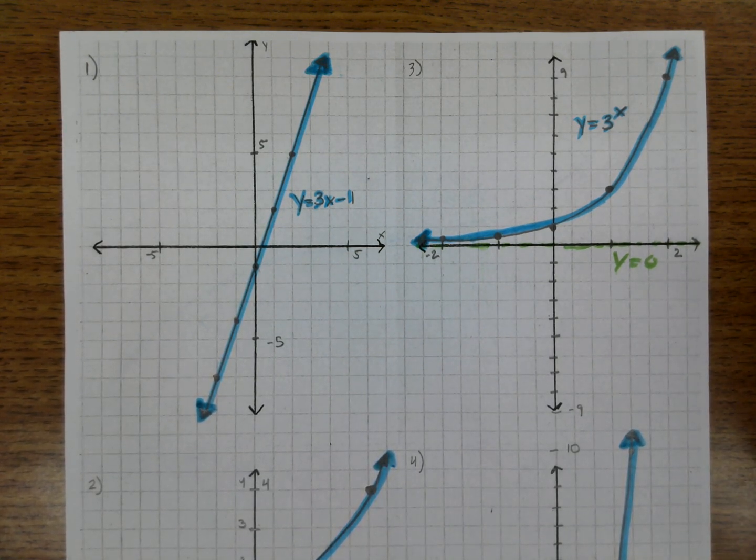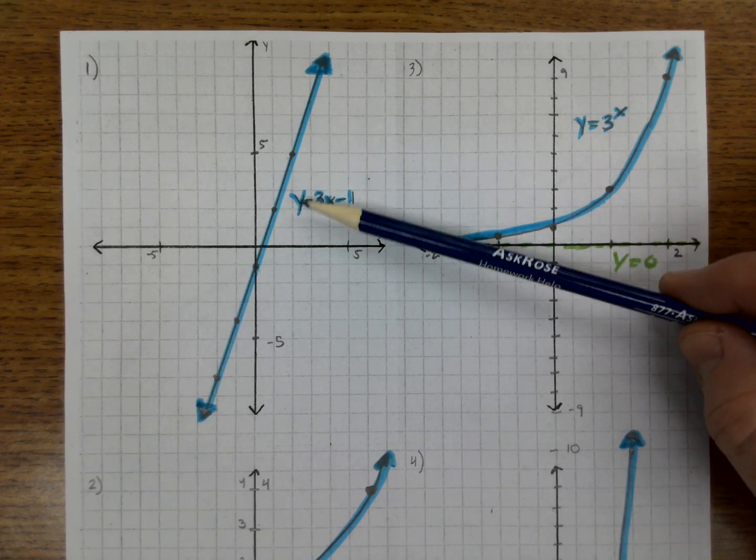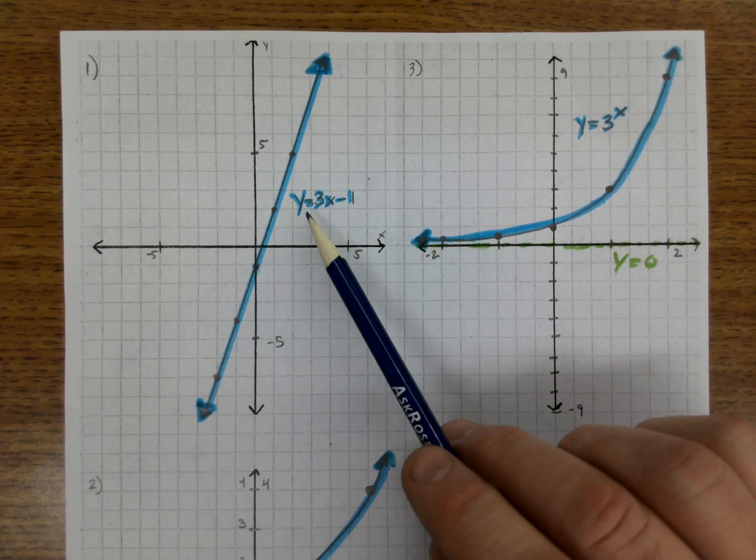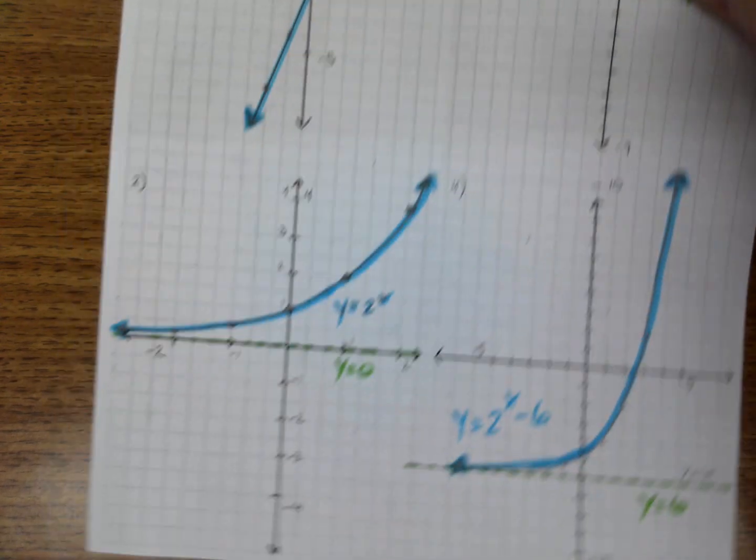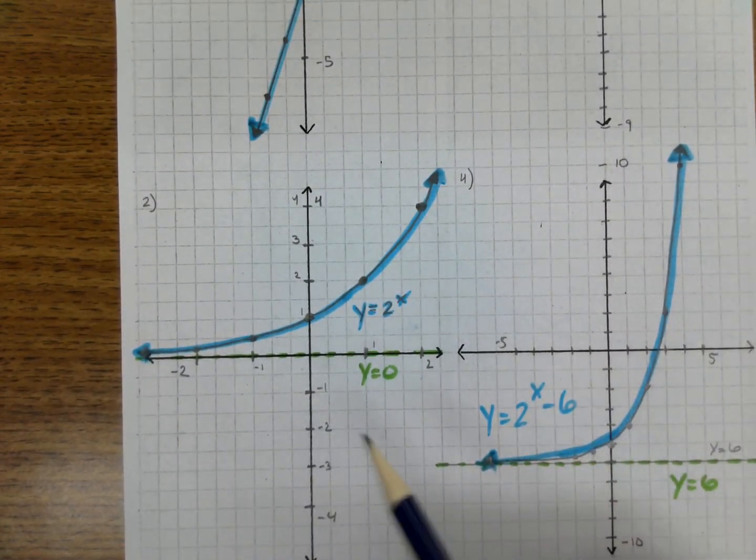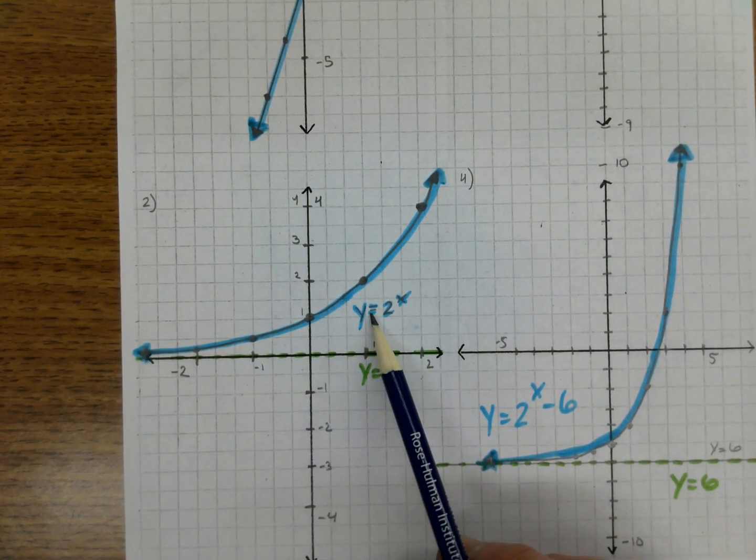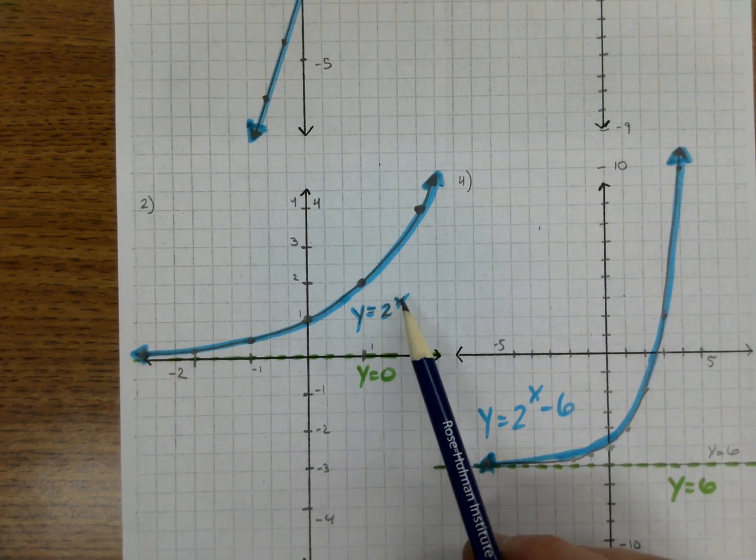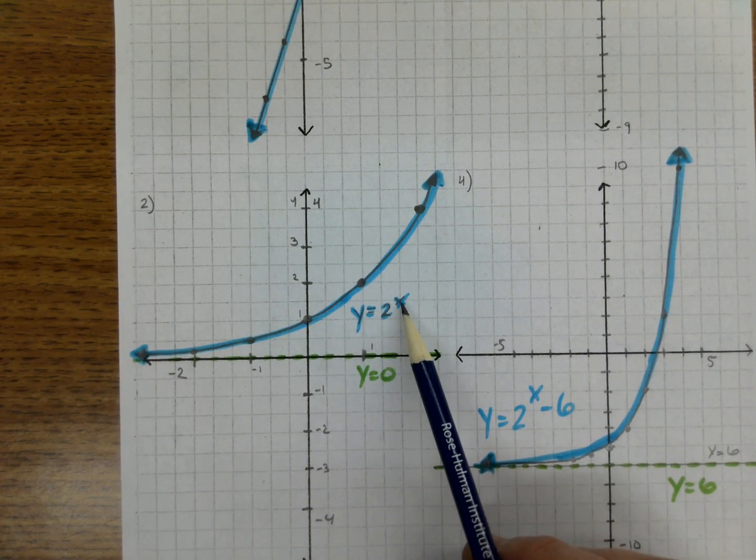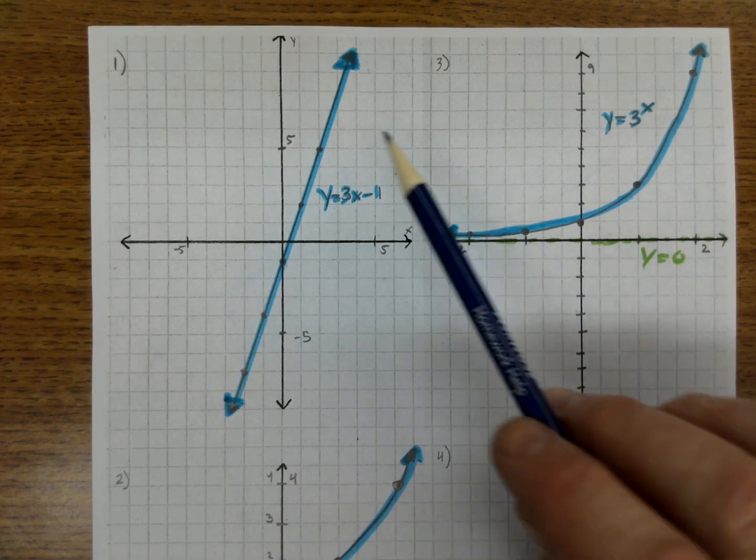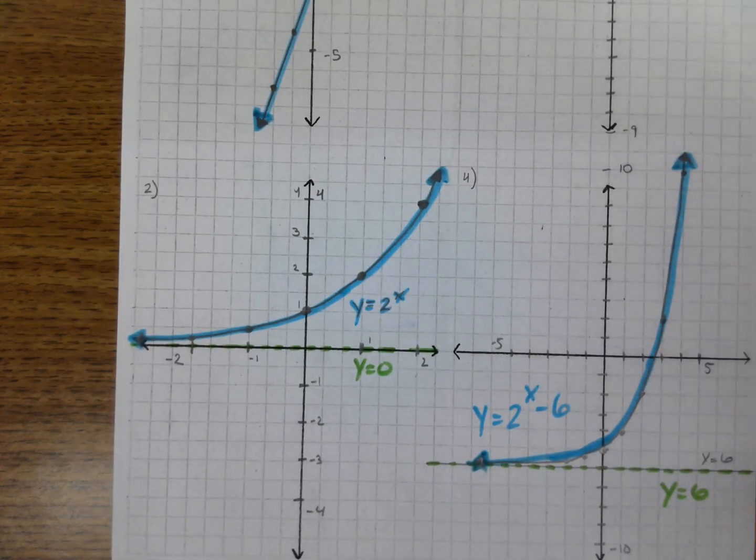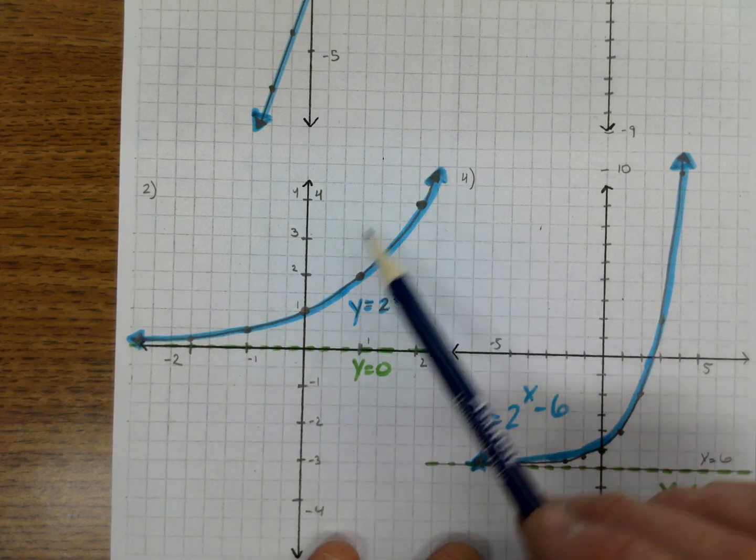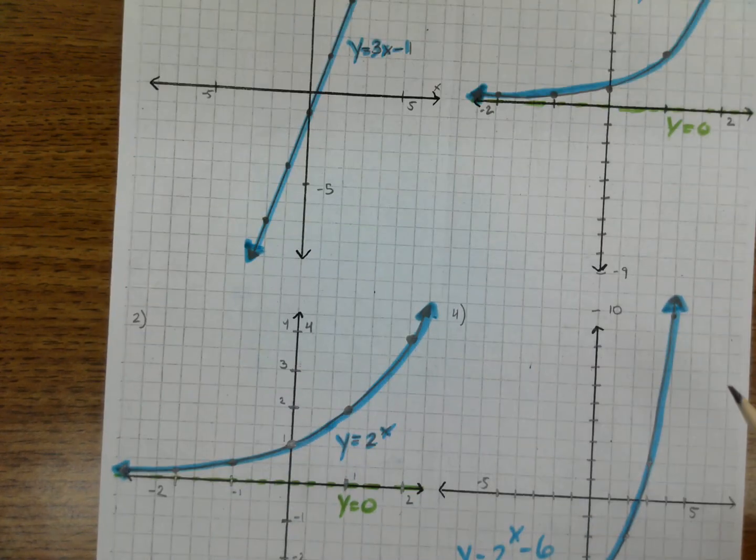Today we're going to talk about making some new kinds of graphs in class. We started off and made some graphs that we've done before, like y equals 3x minus 1, and we've graphed it. Then we moved on to our new graphs that have exponents in it, y equals 2 to the x, but now the x variable is up here in the exponent. That's going to change our graphs from linear equations to what we did last semester into exponential graphs that curve.